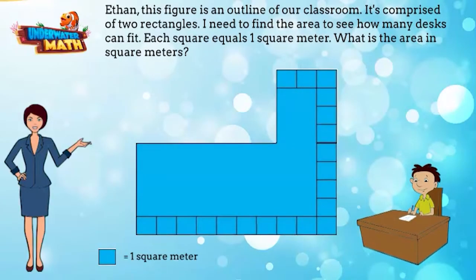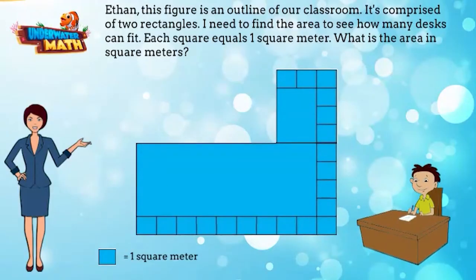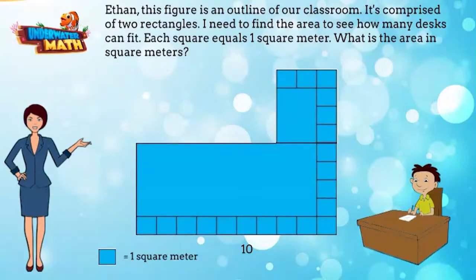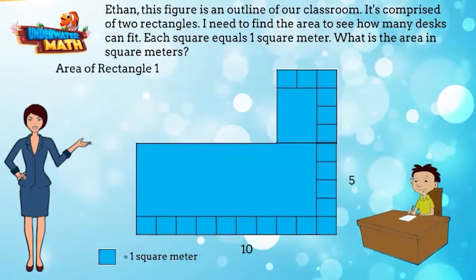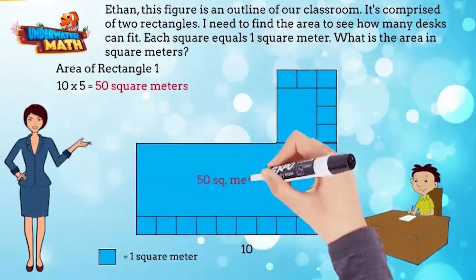No problem, Mrs. Peninickel. First I split the figure up into two rectangles. Let me draw my line here. Now I find the area of each rectangle. The length of the first rectangle is 10 and width is 5. The area of rectangle 1 is 10 times 5 equals 50 square meters. Now I find the area of the second rectangle.